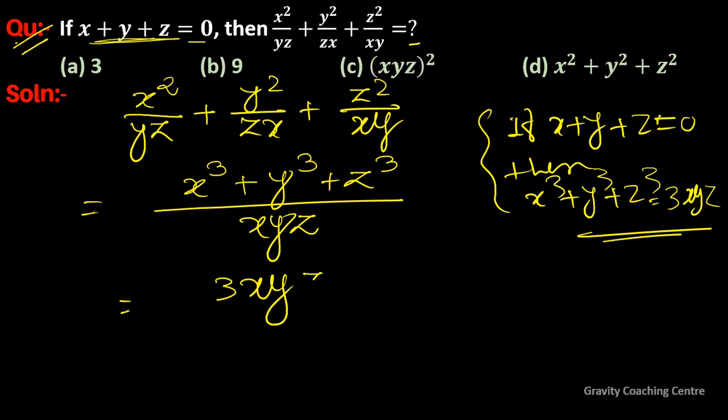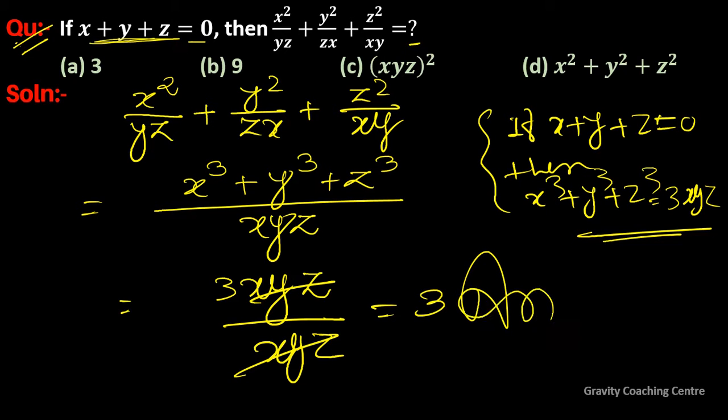We have 3xyz upon xyz. When we cancel the xyz terms, we get 3. Therefore, option A is the correct answer.